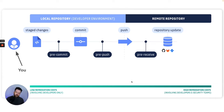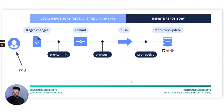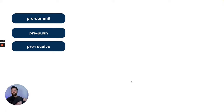For instance, pre-receive — so before it gets into your repository, but after it's left your computer, you can run something. When we talk about Git hooks, three come up the most often: pre-commit, pre-push, pre-receive. If you know how to use Git, you probably know exactly what all of these already do.